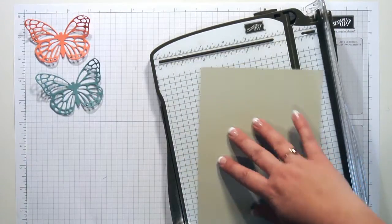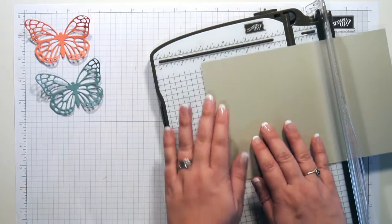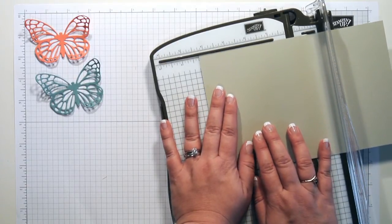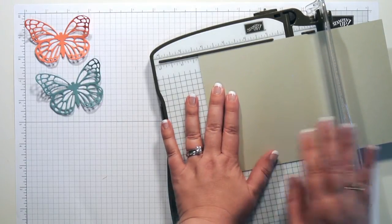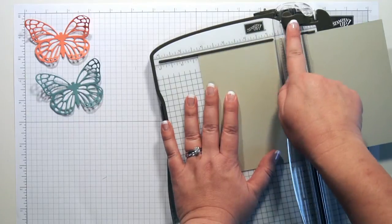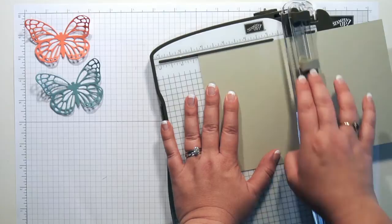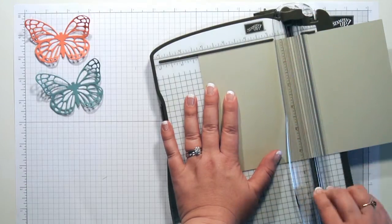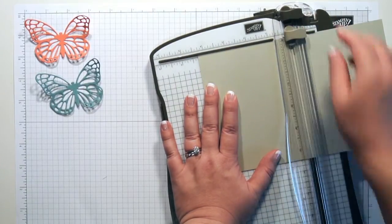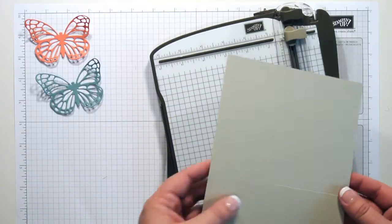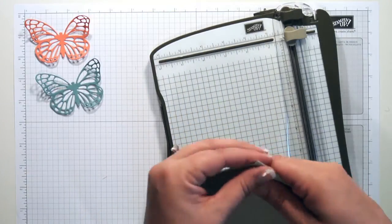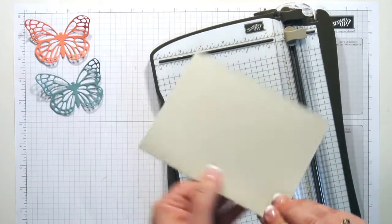And then I'm going to turn it because I want to score it. I'm going to put it here at the 4.25 inch mark. Now if you notice, I've got my cutting blade and I've also got my scoring blade. So this makes it really quick and easy. I just run my score blade over that, and then see it gives you that score line and makes it really easy to fold.